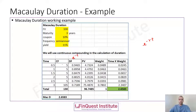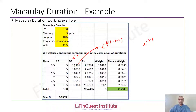The discount factor uses the yield and the time step. For example, 0.946 is derived as e raised to minus 11% × 0.5. We apply this successfully for each time step to arrive at the respective discount factors.